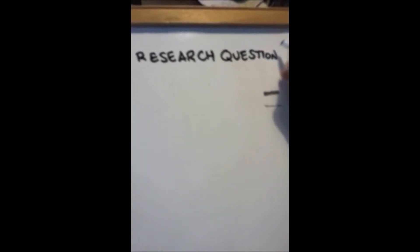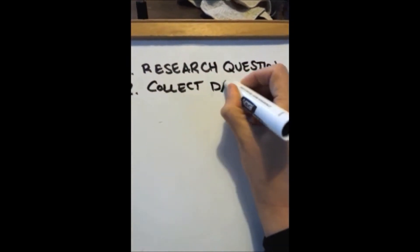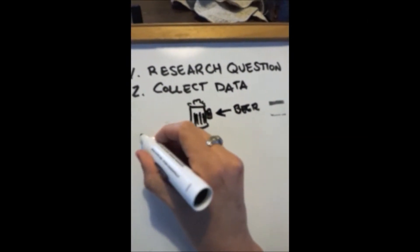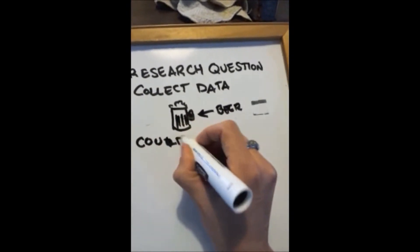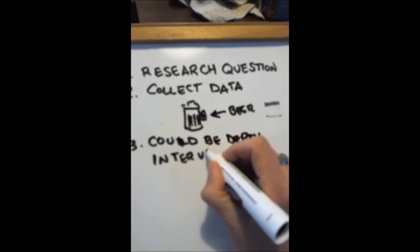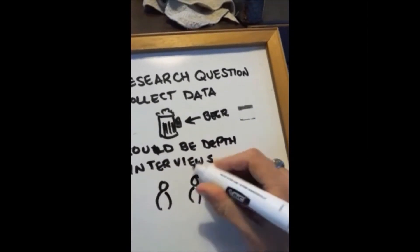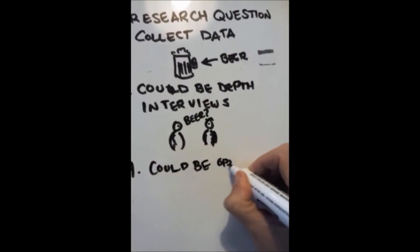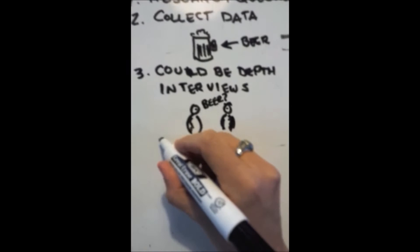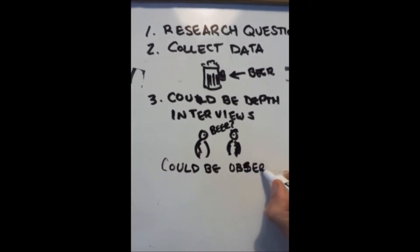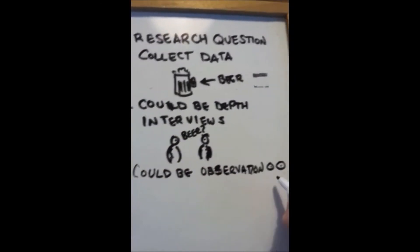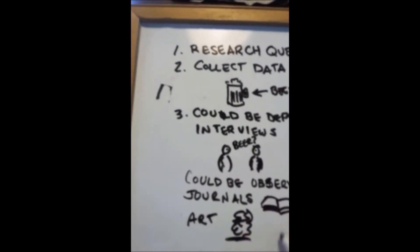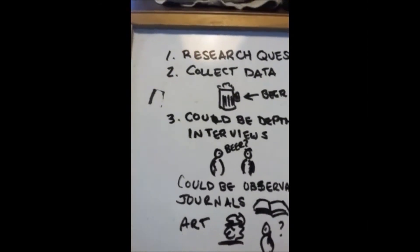Once the researcher identifies the phenomena of interest to be studied and has formulated the research question, they need to collect data. The most common data collection method used in phenomenology is the in-depth interview of participants. However, observation, journals, art, poetry, music, drama, film, novels, tape conversations, and formally written responses are all possibilities.